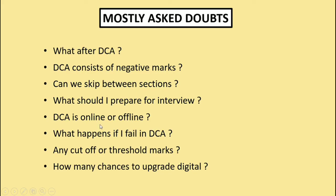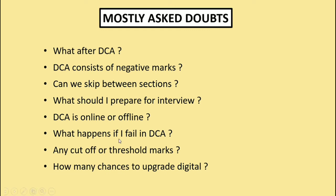What happens if you fail the DCA? Don't worry — last year (2022 batch) candidates were given two chances to write the Digital exam before joining. If two chances are available this year as well, the second exam would be approximately in April, with only about 20–30 days between attempts. However, till now there is only one Digital exam scheduled for the 2023 batch, in mid-March.